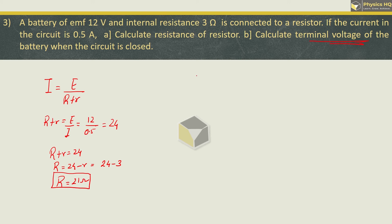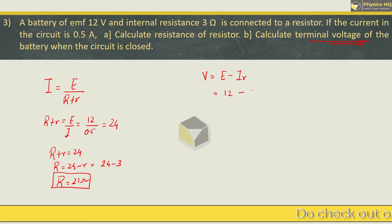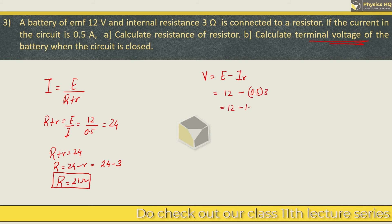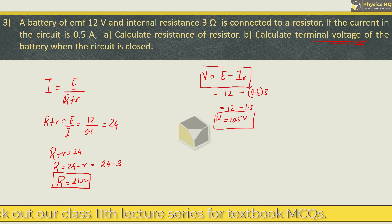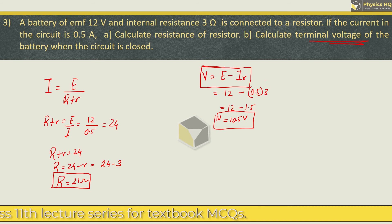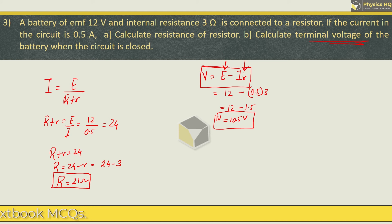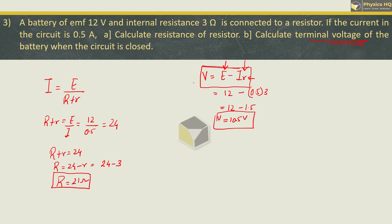Next you asked calculate the terminal voltage. Terminal voltage ka simple formula hai E minus I into r. E is the EMF of the cell minus current, given as 0.5 into internal resistance 3. So this becomes 12 minus 1.5 which is 10.5 volt. We already covered this in detail in the MCQs part. Please check it out if you haven't. This is the total potential that battery can supply, and this is the voltage drop that happens inside the battery because of its internal resistance small r. Whatever remains is given out at the terminals. So this is the formula that is used. Hope you all understood this. Next problem.